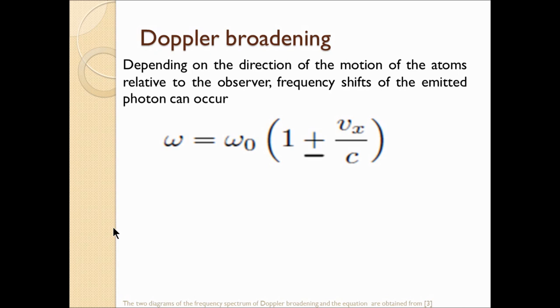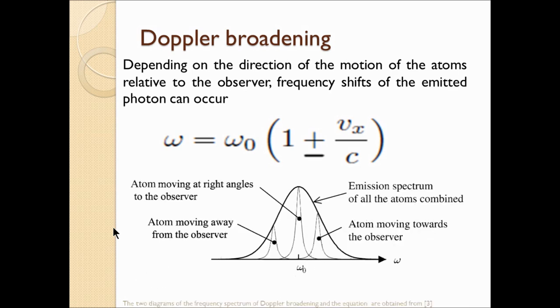When the atoms are moving at right angles to you, the only effect seen is the natural line broadening, due to the variation of the difference between two specific energy levels.